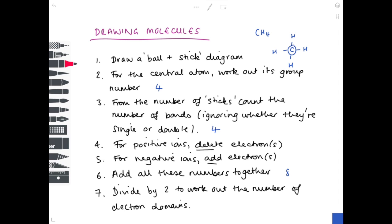And then finally, we want to divide by two to work out the number of electron domains. So eight divided by two is four — we have four electron domains. Now it's a matter of learning the various names, angles, and shapes. For example, you will have to learn that four electron domains is a tetrahedral shape with a bond angle of 109.5 degrees. Unfortunately, there's no way of avoiding that rote learning.